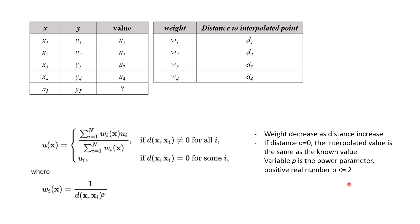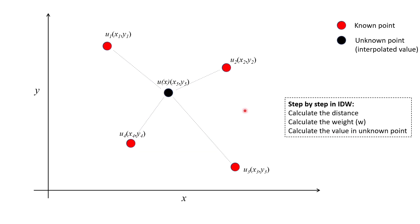This parameter also controls the influence of known points on the interpolated points. This slide shows the visualization of points with known values and the interpolated point. To summarize, the step-by-step process is: first, calculate the distance between the location of known values and the unknown values; then calculate the weight; and finally calculate the estimate of the interpolated value. Now let's go back to Jupyter Notebook.